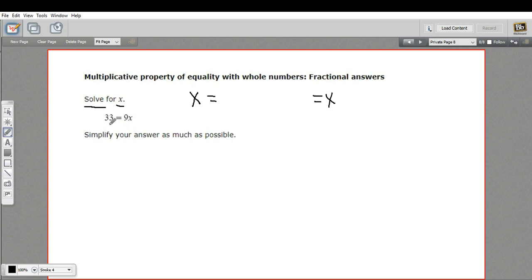How are we going to do that here? We have 33 equals 9x. Well, you should think of 9x as 9 times x. I'm going to rewrite this equation so it looks like that. So 33 equals 9 times x.